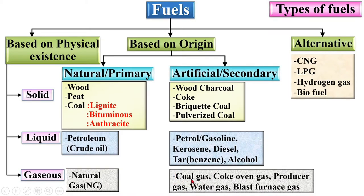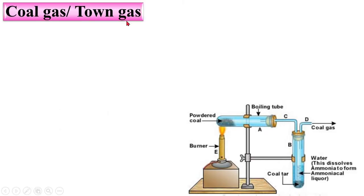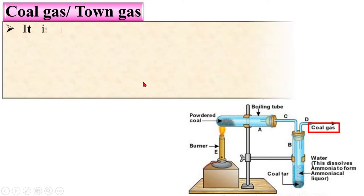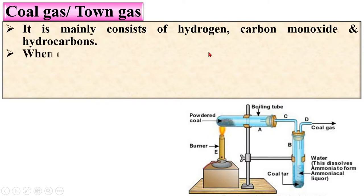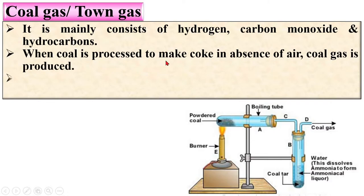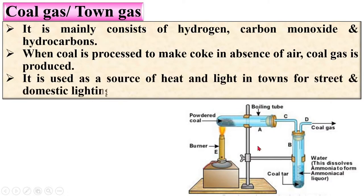Next, from the artificial category, is coal gas — sometimes also known as town gas. It mainly consists of hydrogen, carbon monoxide, and hydrocarbons. When coal is processed to make coke, in the absence of air, coal gas is produced — here you can see the coke-making process.